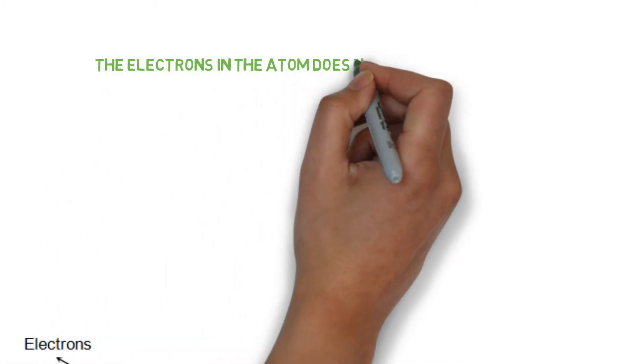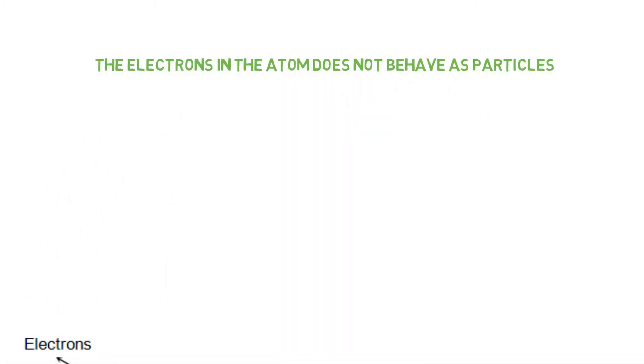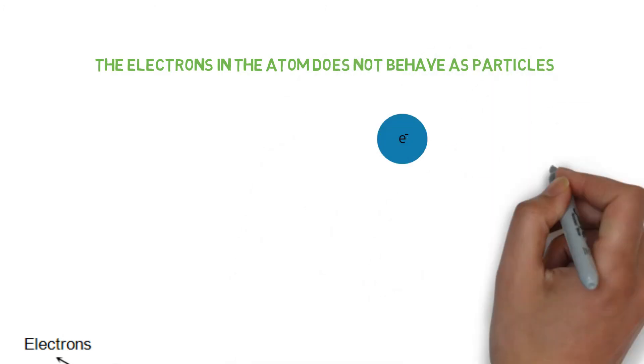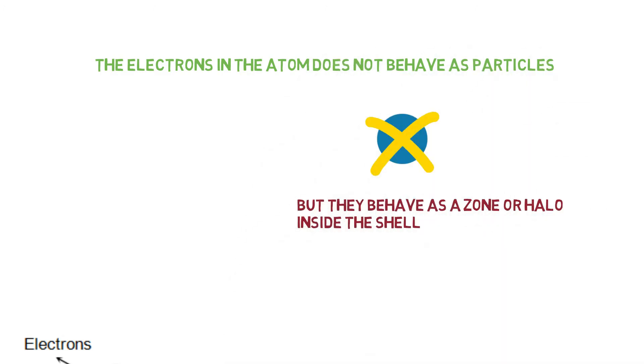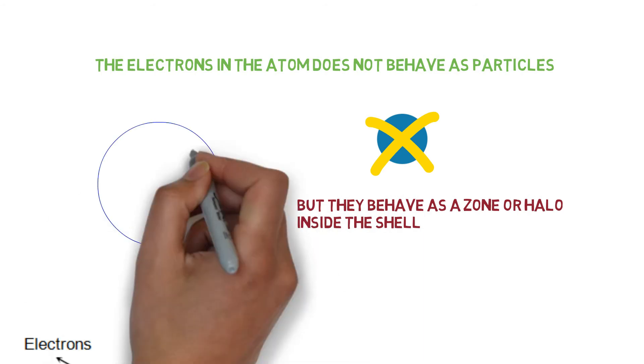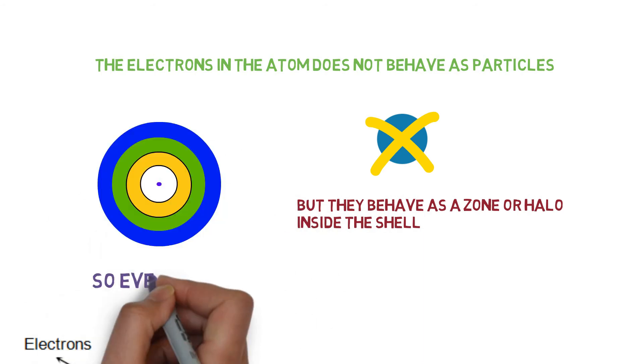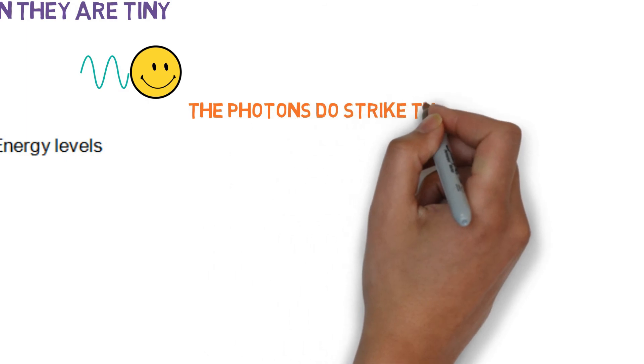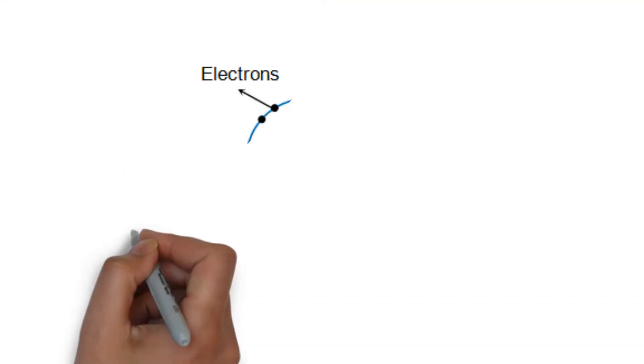Actually in an atom, the electron does not behave as a particle but as a zone or a halo inside the shell. The photons do strike this zone and energize it, where the halo acts as a zone of influence for the electron.